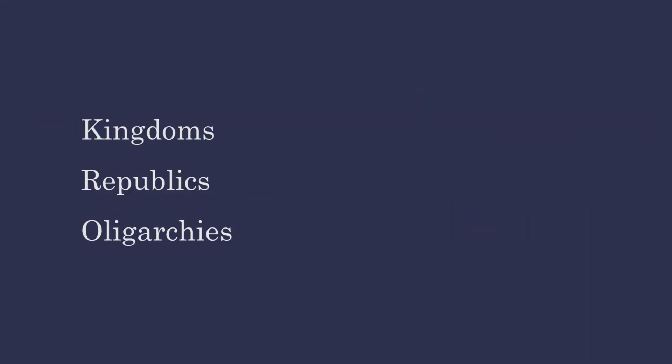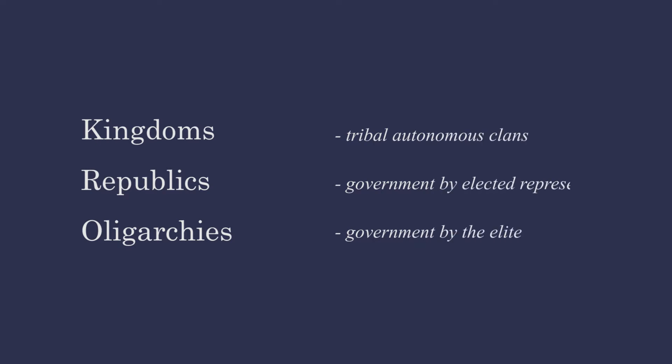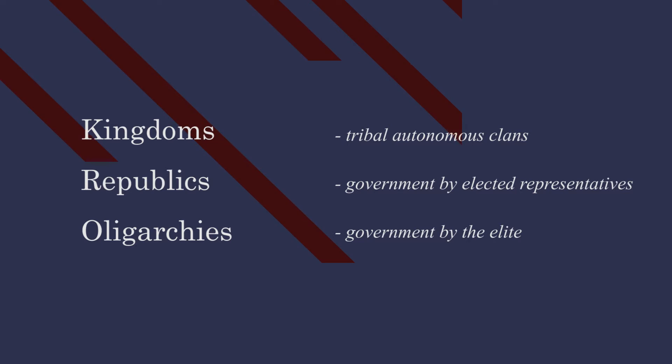What is the difference between republics and oligarchies? Oligarchy is when the system is governed by a few elite or powerful people, and a republic is when the system is governed by elected representatives.